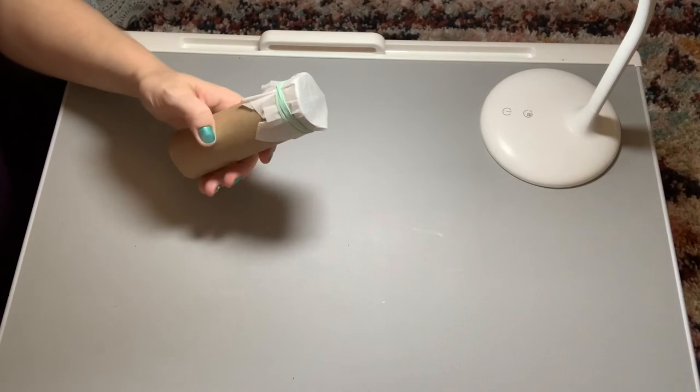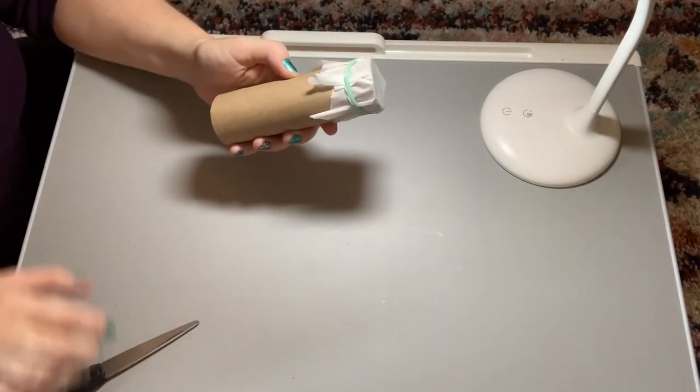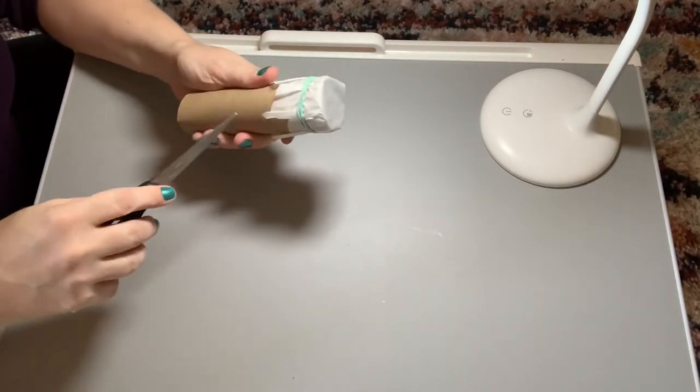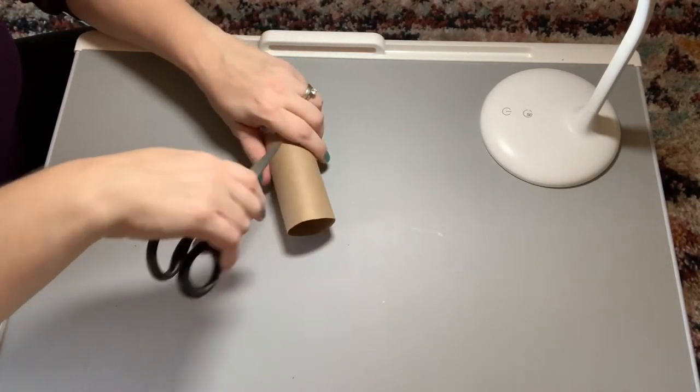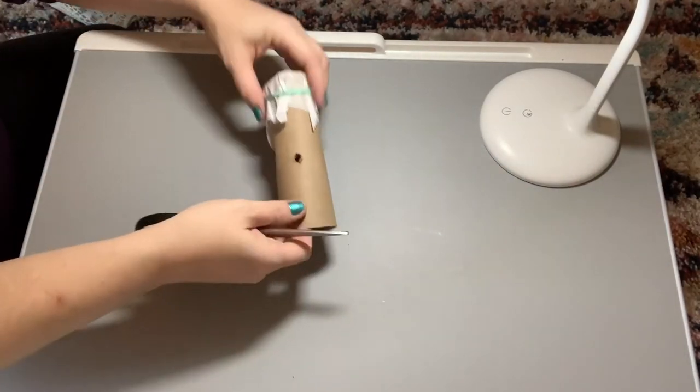So what you will want to do is poke a hole into the tube, and you might need a parent to help for this, especially if you're using something like scissors. You don't want to hurt yourself, so something sharp to poke a hole, scissors, screwdriver, something like that.